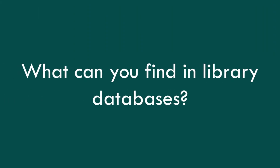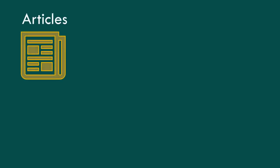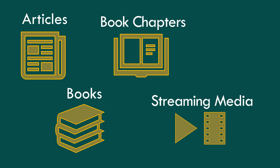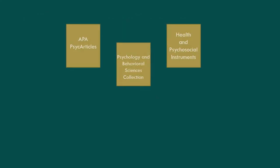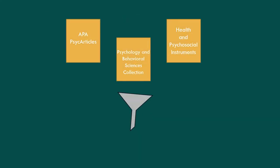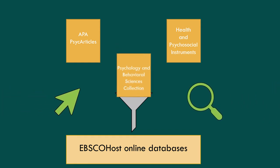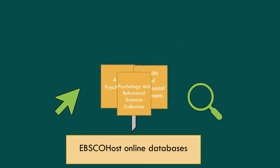What can you find in library databases? Depending on the database, you may find articles, books, book chapters, streaming media, or images. Some databases are combined together in a larger platform, which allows you to search several databases at once, like ProQuest Central or EBSCOhost online databases.